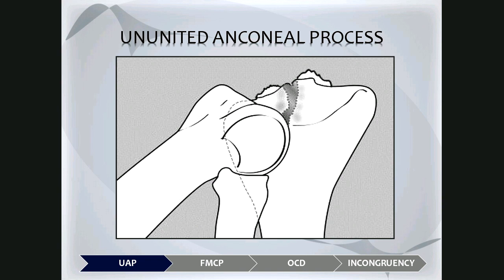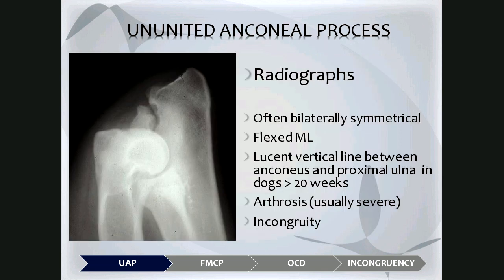In ununited anconeal process, there is a jagged radiolucent vertical line that demonstrates the separation of the anconeal process, which is not fused to the rest of the ulna, and there may be new bone formation indicative of arthrosis. On radiographs, the finding can often be bilaterally symmetrical, so it's important to take both left and right limbs. The flexed mediolateral view removes superimposition from the distal humerus over the anconeus, allowing it to be visualized very well.